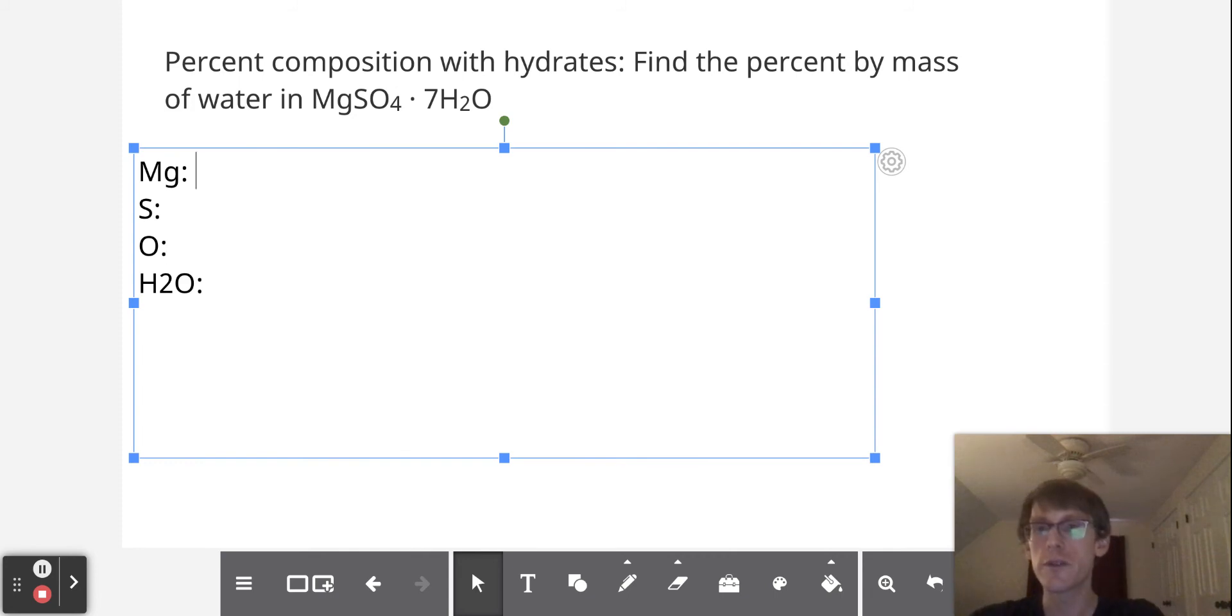So what we'll do is we'll write out that magnesium is 24.31 grams per mole. Sulfur is going to be 32.06 and oxygen is going to be 16.00.